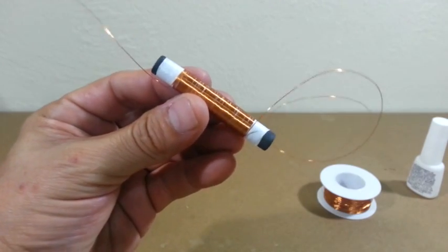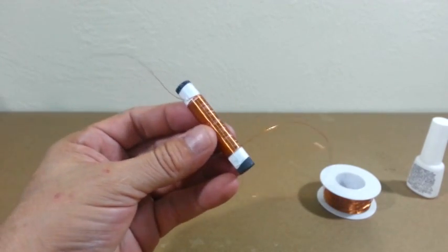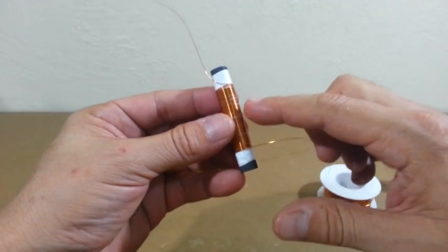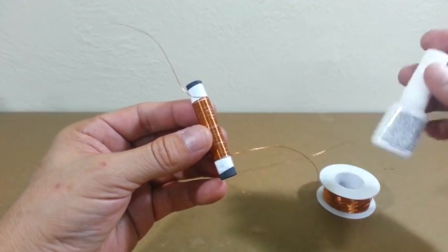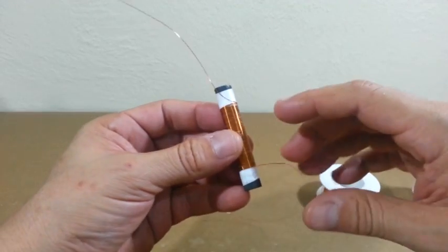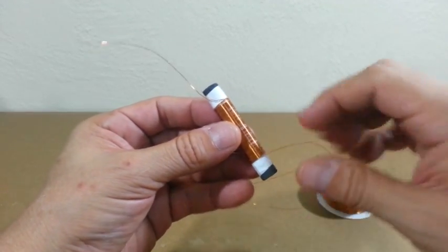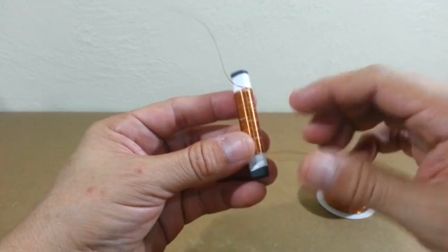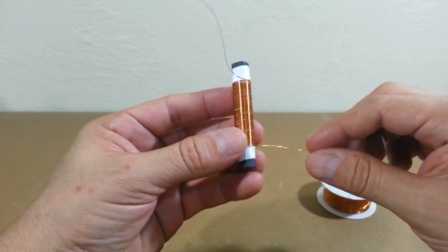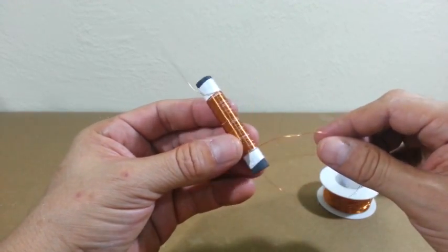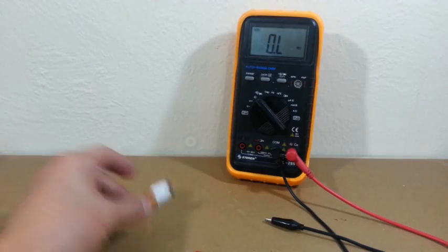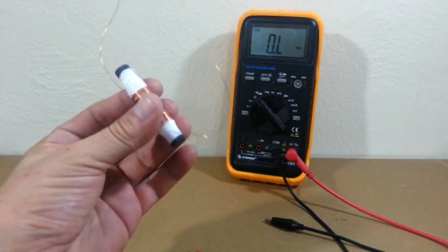The first layer of the coil is ready. To avoid unwinding of the wire you can use super glue. After the first layer is ready, use more tape and wind your second layer and so on until you finish the 450 turns. The secondary coil is ready.